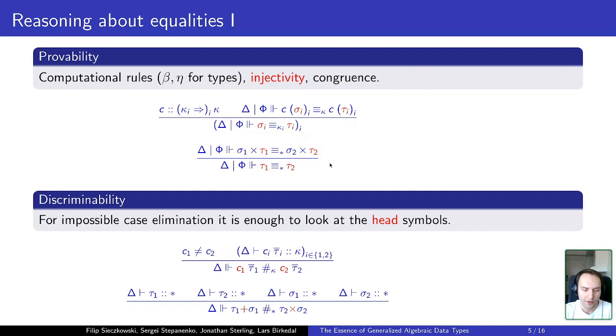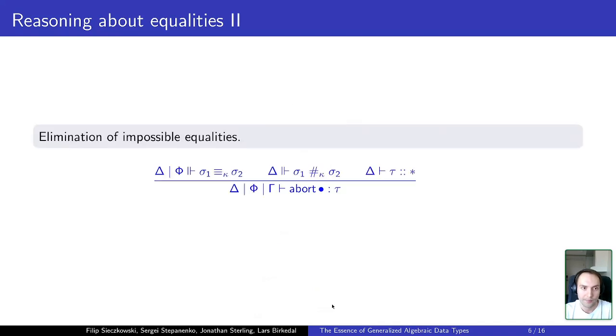The second class of judgments is discriminability judgments that allows us to show that some equalities are impossible to hold. So for example, if we look at two applications of sequences of types to some different constructors, we know that they cannot be equal. So for example, if we have an application to type sum and type product, then we know that those two applications cannot be possibly equalized.